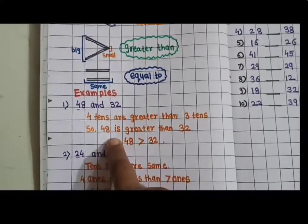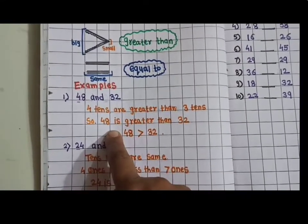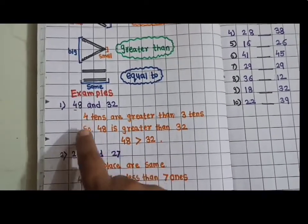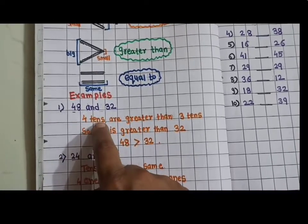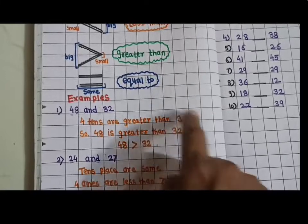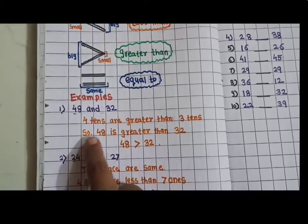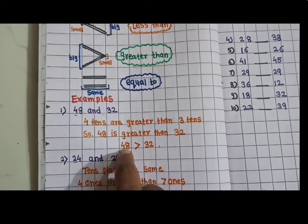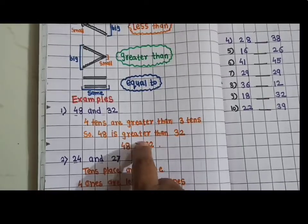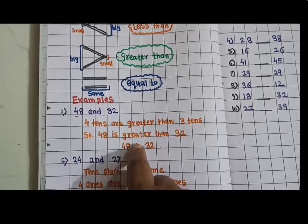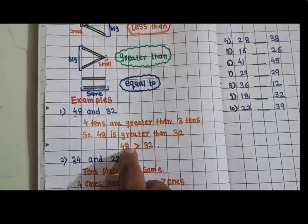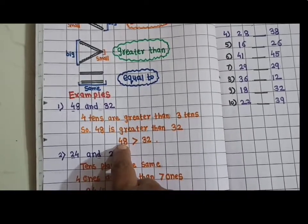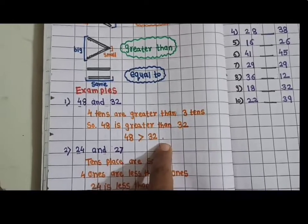And then you have to write some examples with explanation. See, 48 and 32 means 48 means 4 tenths, and 4 tenths are greater than 3 tenths. Here is 3 tenths. So 48 is greater than 32. 48 big number. So this arrow or this sign, open sign, open space here to great number. So 48 is greater than 32.